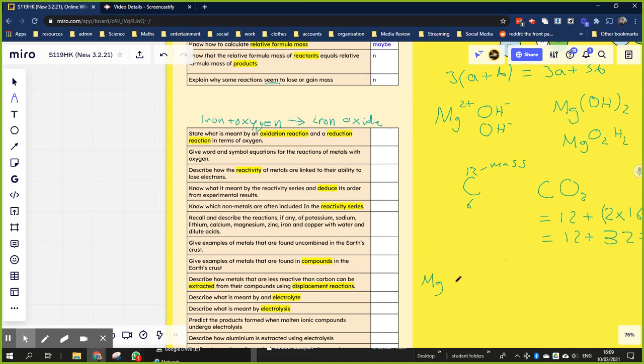So magnesium plus oxygen produces... And this one is when you need to know a little bit more about the charges of these things, but I don't think you need to know this much within this topic. So what we'll do is I'll just say it's Mg, and then I have to work this out for a second. Mg. Yeah, it's just MgO.